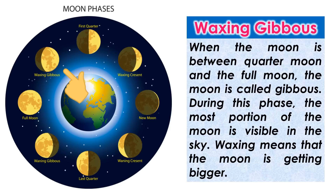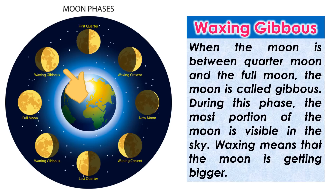Waxing gibbous. When the moon is between quarter moon and the full moon, the moon is called gibbous. During this phase, most of the portion of the moon is visible in the sky. Waxing means that the moon is getting bigger.